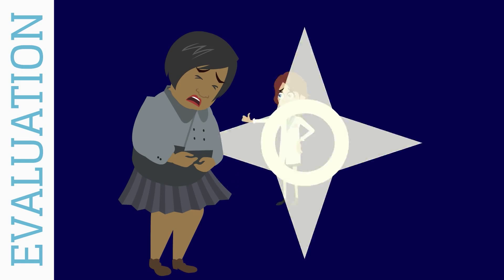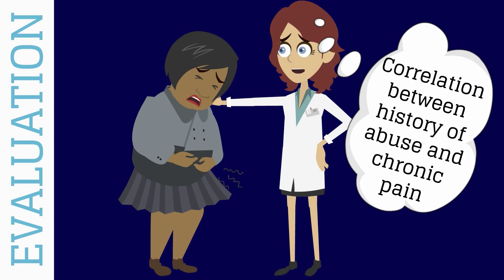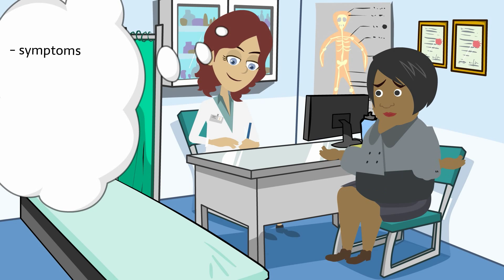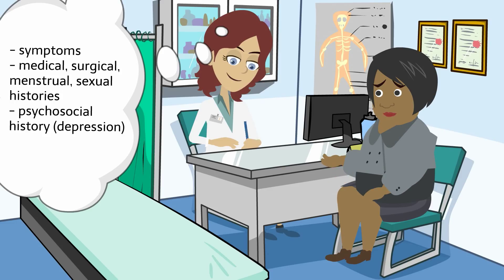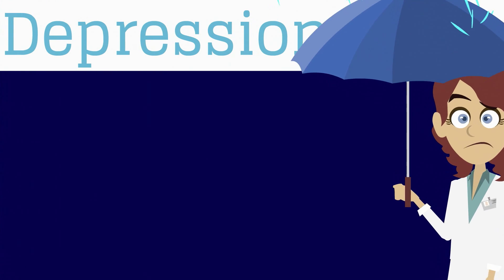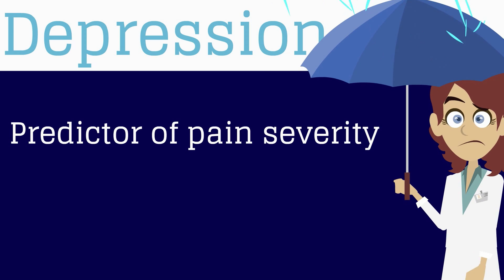The successful evaluation and treatment of a patient with chronic pelvic pain requires a patient and caring physician. The history and physical is an important time in which the physician can both gather information and establish a trusting rapport. Remember that there is a significant correlation between a history of abuse and chronic pain. During your history, ask for a description and timing of the symptoms, perform a thorough medical, surgical, menstrual, and sexual history, and obtain a psychosocial history — especially ask about depression. Depression is one of several predictors of pain severity and is a significant indicator of responsiveness to treatment.